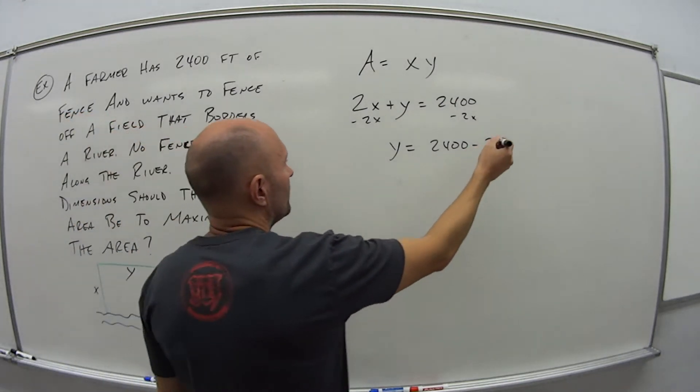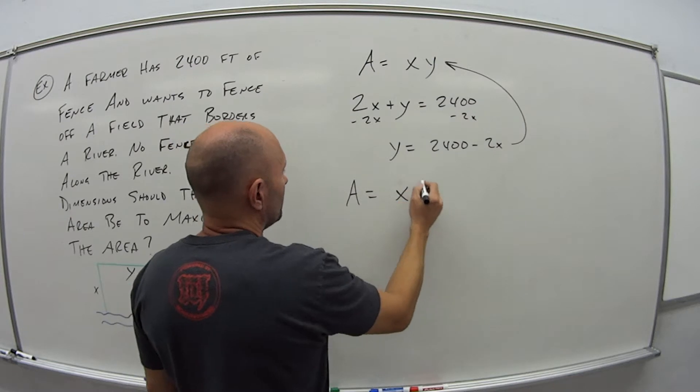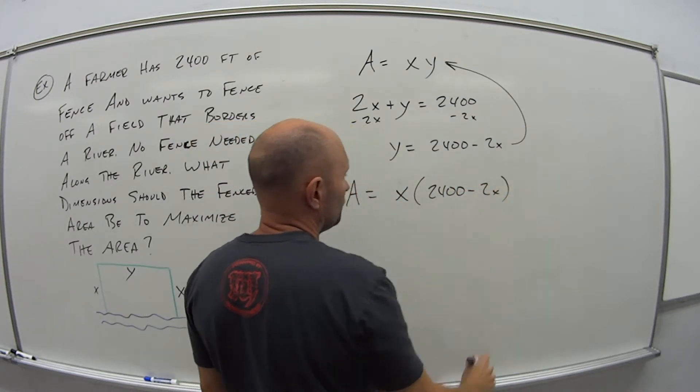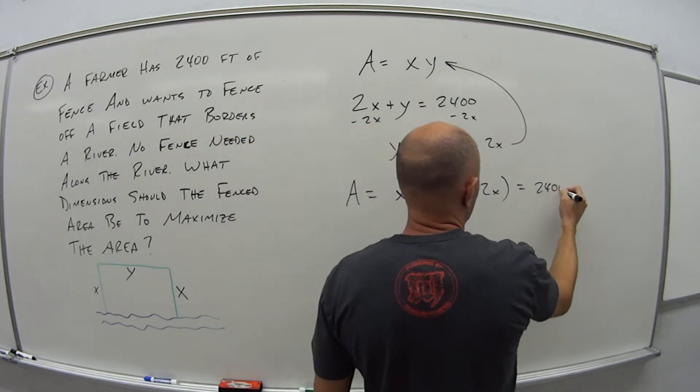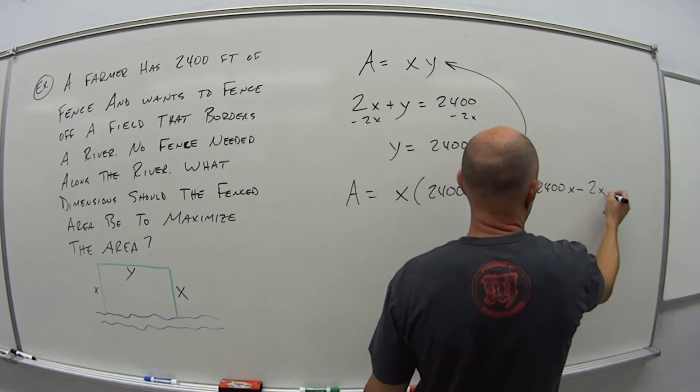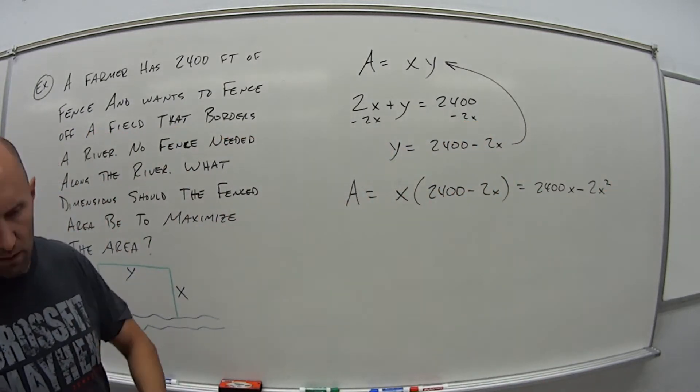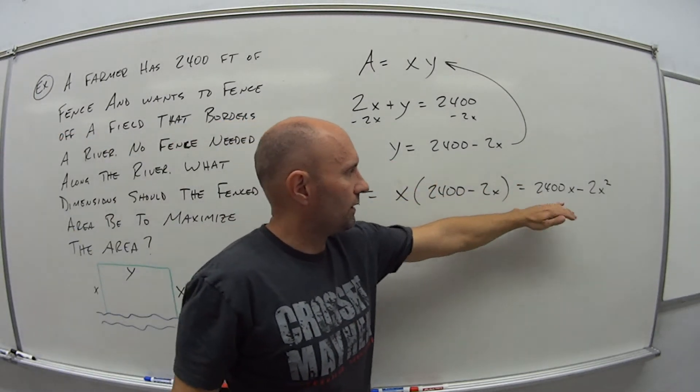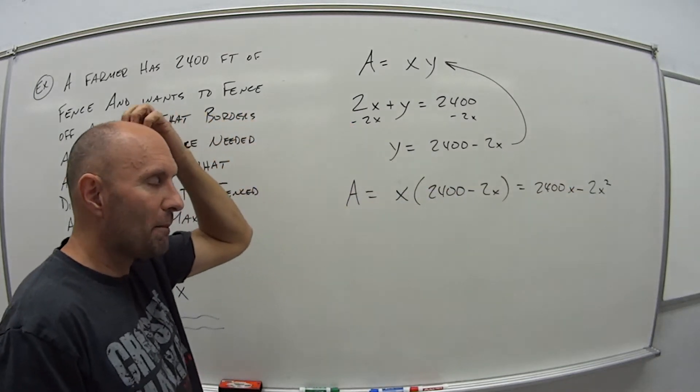So I can use substitution method here. If I subtract 2x from both sides, I get y is equal to 2,400 minus 2x. And if I now plug this back into this equation, I get that the area is x times (2,400 minus 2x), which if I simplify this, distribute the x, I get 2,400x minus 2x squared. So now I have one equation. Area is equal to this, 2,400x minus 2x squared. That's what I want to maximize.